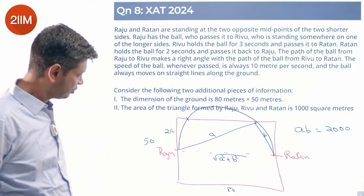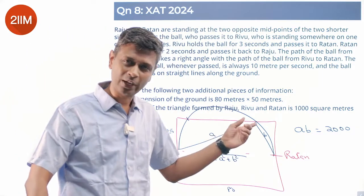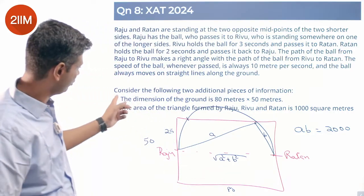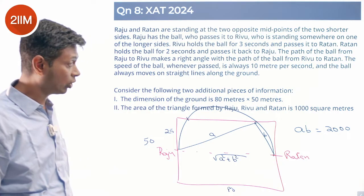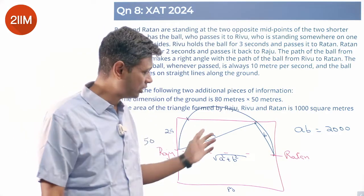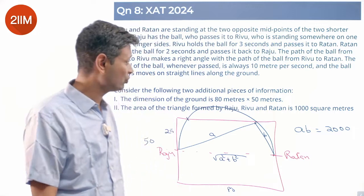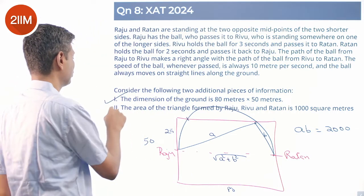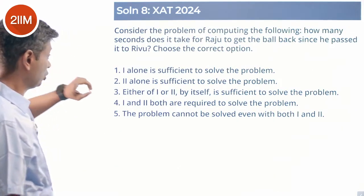If we know the ground is 80 by 50, we can locate Rivu's position, draw the circle, find the midpoint, and determine all three distances. So Statement 1 alone — the dimensions 80 by 50 — is sufficient. Statement 2 alone — the area is 1000 — is not sufficient. The answer is Statement 1 alone is sufficient.